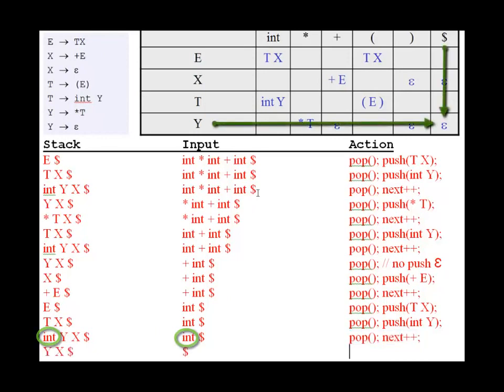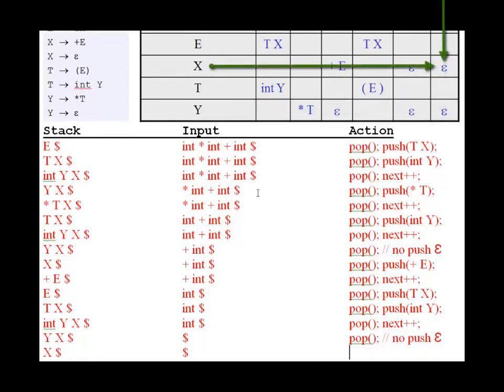Here's where things start collapsing. We have Y and a dollar sign, which is an epsilon, so we pop with no push. Same thing for X and a dollar sign—we pop with no push. Finally, we get to our matching dollar signs.